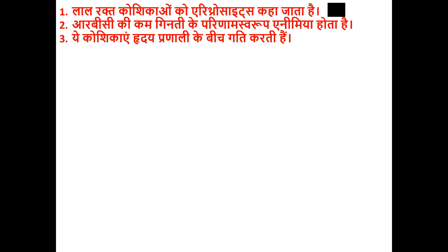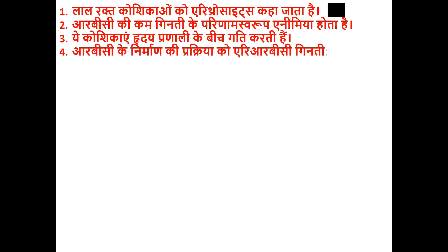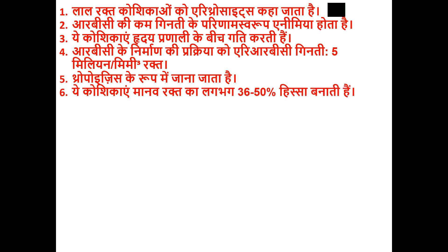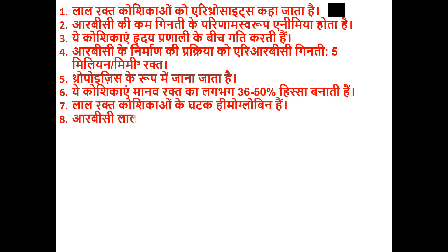ये कोशिकाएं हृदय प्रणाली के बीच गति करती हैं। RBC गिनती लगभग 5 million प्रति मिमी³ रक्त होती है। RBC के निर्माण की प्रक्रिया को एरिथ्रोपोइसिस के रूप में जाना जाता है। ये कोशिकाएं मानव रक्त का लगभग 36-50% हिस्सा बनाती हैं। लाल रक्त कोशिकाओं का प्रमुख घटक हीमोग्लोबिन है।